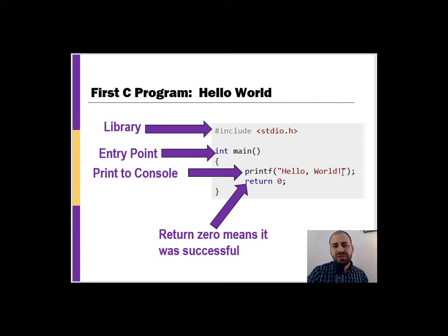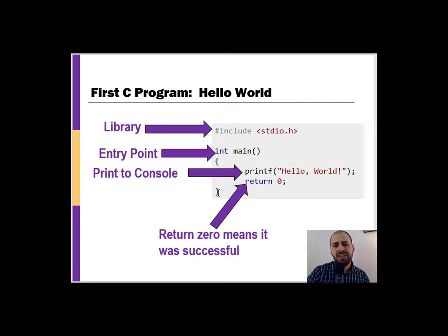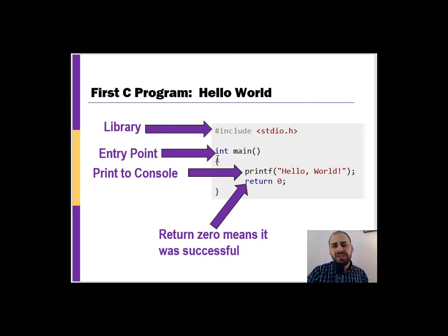We're going to print everything inside those double quotes to the screen. Return zero is our way of ending the program — zero indicates success, meaning the program ran successfully. The main function here is the entry point; this is where the program starts running. The curly brackets define a code block — everything in between is contained inside the main function. Inside we display something on the screen, then return, indicating success.